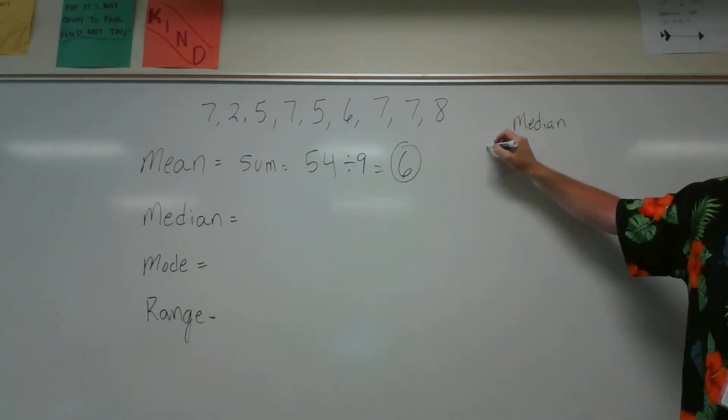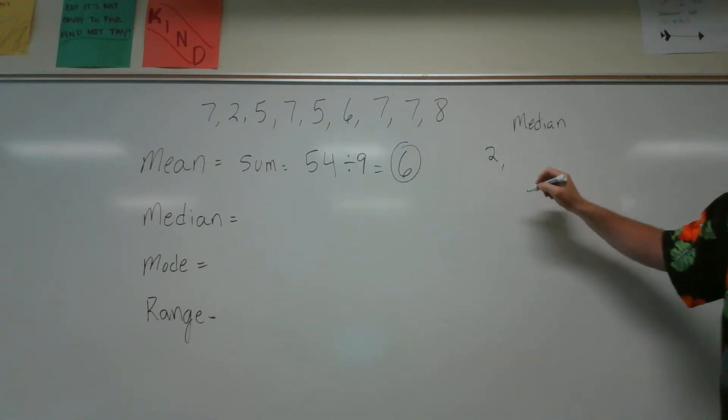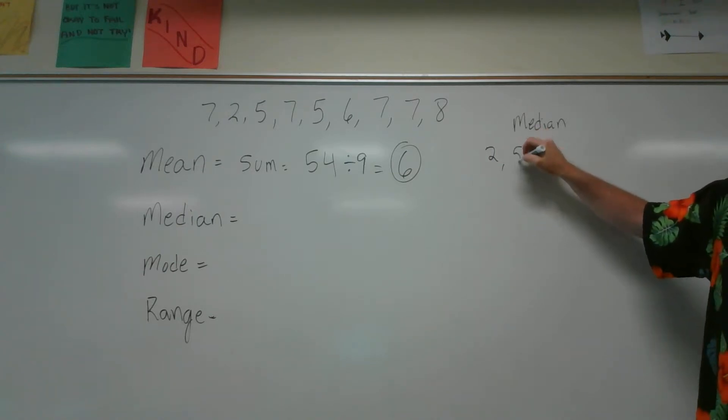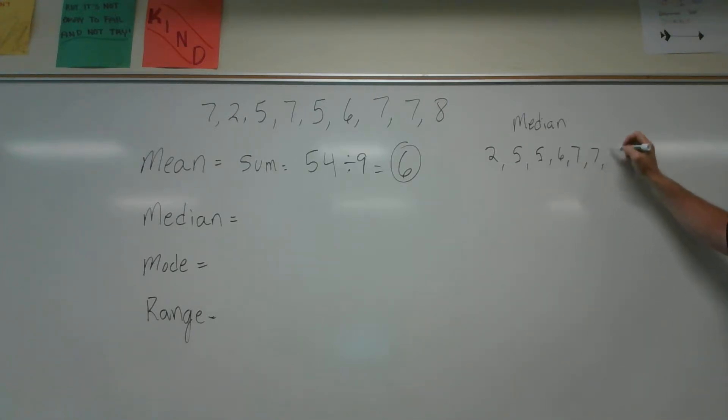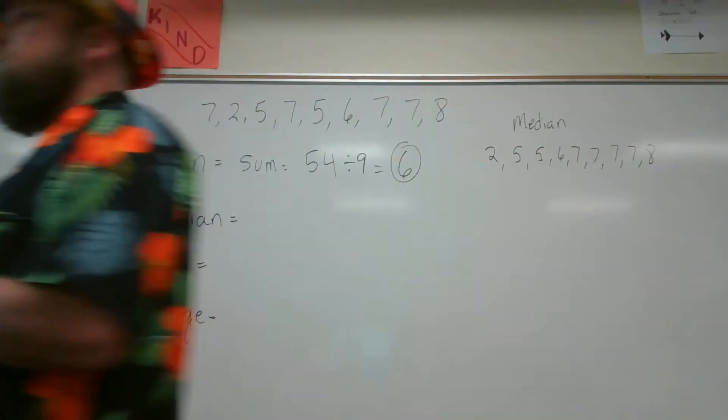Okay, we need to order the data from smallest to greatest. So, go ahead and order that for me, Blake. What's the smallest one? Two. Then? Five. Then? Five. Then? Six. Then? Seven. Then? Seven. Then? Seven. Then? Eight. Are you sure? Okay, good. And then what's it say to do, Blake?